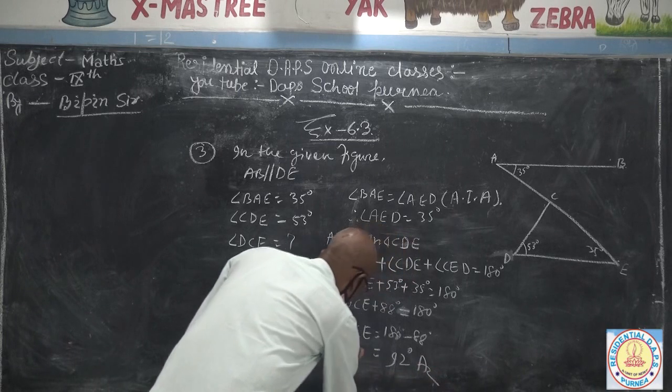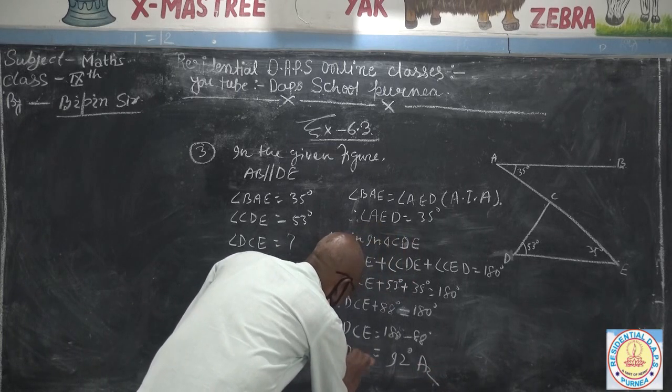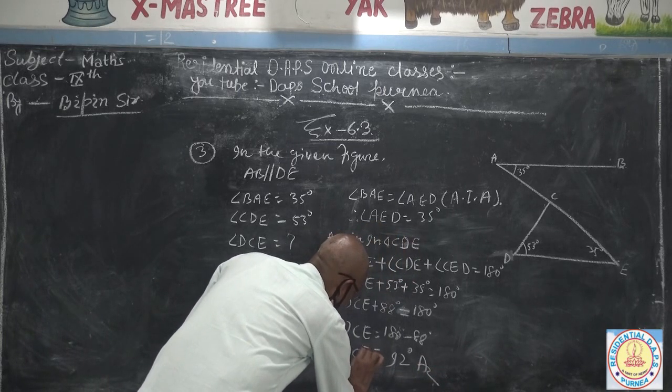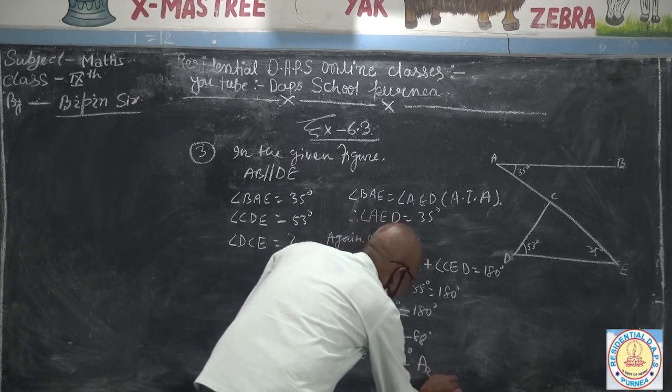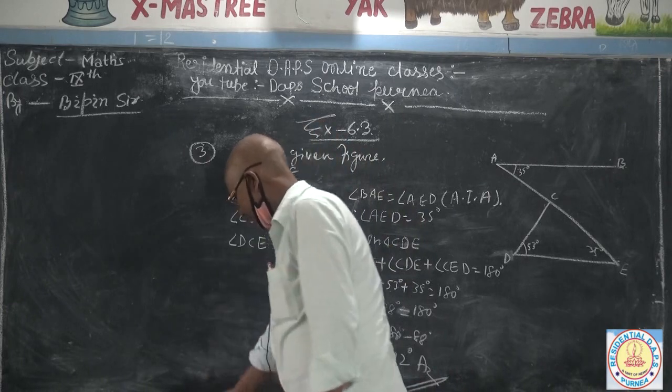So angle DCE is equal to 92 degrees. That is your answer.